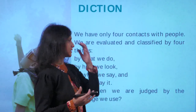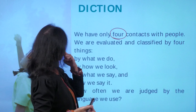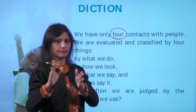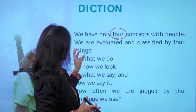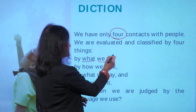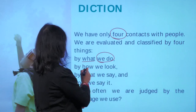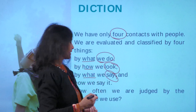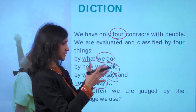A thought before we start: we have only four contacts with people, and we are evaluated — which means we are judged and classified. Classification is keeping people in several buckets. We have only four contacts with people, and we are evaluated and classified by four things — so how are we judged by these four things?